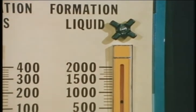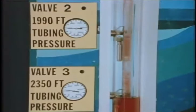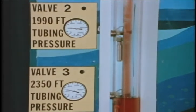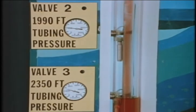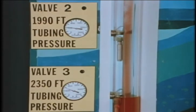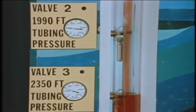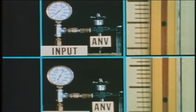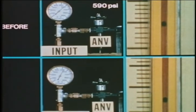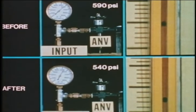With this reduced gas-to-liquid ratio, the flowing pressure gradient has increased. As a result, the pressure in the tubing opposite the number three gas lift valve at 2,350 feet exceeds the input gas pressure of 540 PSI, so gas cannot flow from the casing to the tubing at this valve. Gas is now being injected at the next valve up the hole at 1,990 feet. Thus we see that only a 50 PSI drop in input gas pressure has caused a severe loss of production.